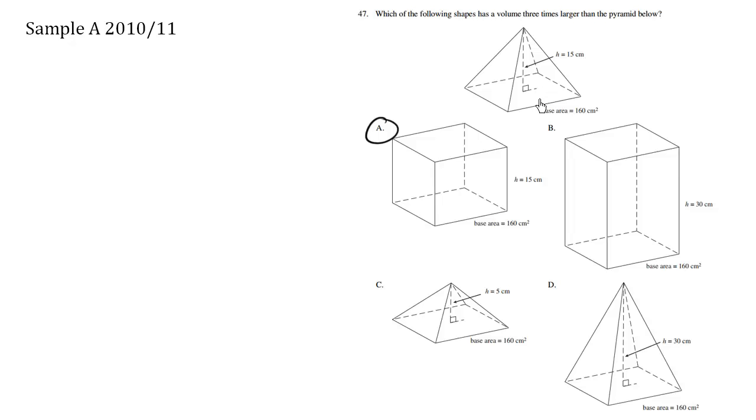And the idea of tripling the volume also applies to a cone, a smooth cone shape given the same surface area at the bottom as well as the height as compared to a cylinder. But here in this case, we're talking about the square-based pyramids.